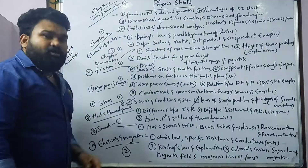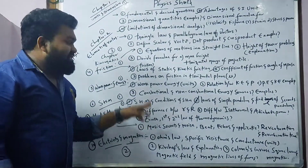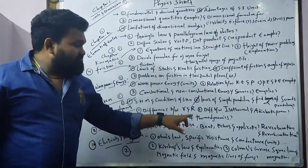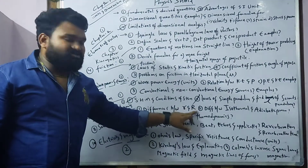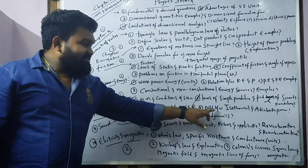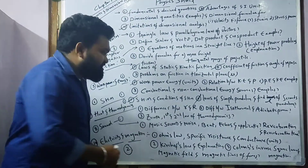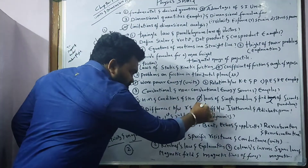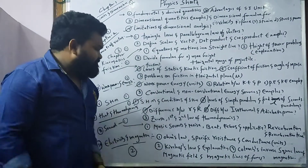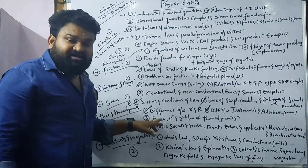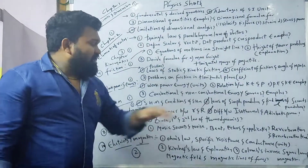Coming to the heat and thermodynamics chapter: differences between small r and capital R — gas constant and universal gas constant. Differences between isothermal process and adiabatic process — these are very important questions. What is the zeroth, first, and second law of thermodynamics?